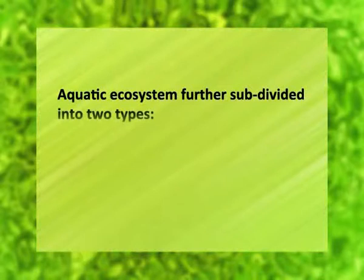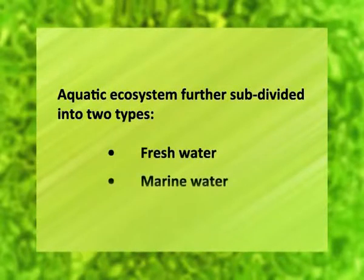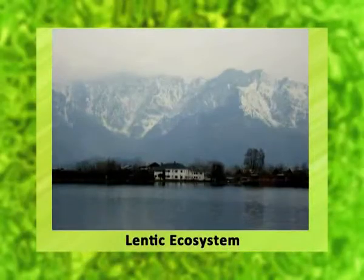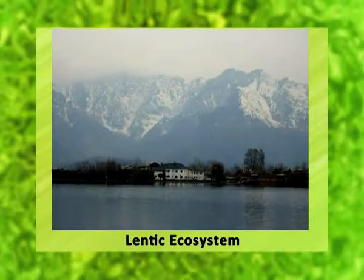Aquatic ecosystem is further subdivided into two types: freshwater and marine water. Freshwater ecosystem has again two sub-divisions. Number one, lentic waters — that is, stagnant waters — for example, lakes and ponds.